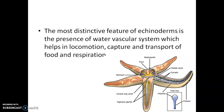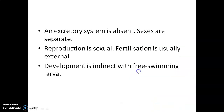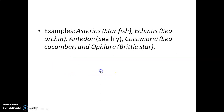The water vascular system helps in locomotion, capture and transport of food, and respiration. The excretory system is absent. Sexes are separate, meaning they are dioecious. Reproduction is sexual and fertilization is usually external. Development is indirect with free-swimming larvae. Examples include starfish, sea urchin, sea lily, sea cucumber, and brittle star.